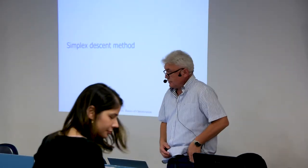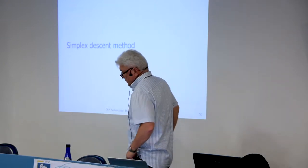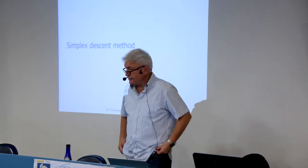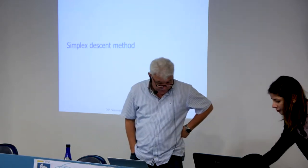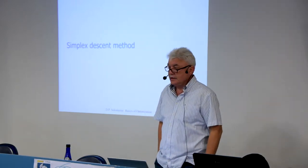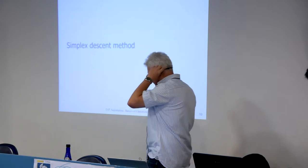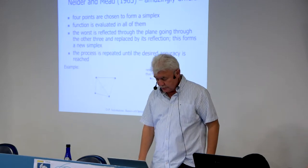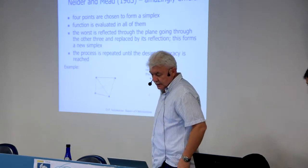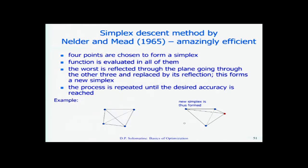This idea of random search — attempting in a clever fashion to move towards the minimum — was also implemented in the so-called simplex descent method. The paper was written by Nelder and Mead in 1965, and this method appeared to be amazingly efficient.